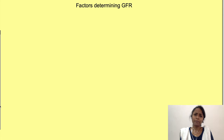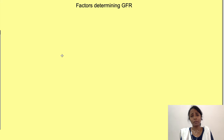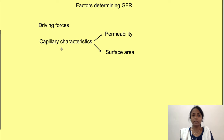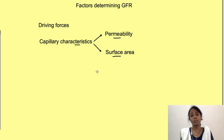What are the factors which determine how much of this plasma will filter? There are two things: one is the driving forces across the capillary, and second is the characteristics of the capillary — that is, how permeable it is and how much surface area it has.